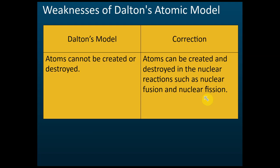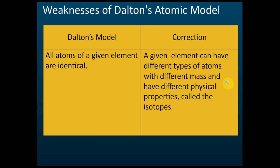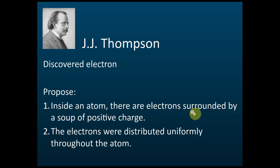So atoms can be created and destroyed. Also, Dalton said all atoms of a given element are identical, but not really — later scientists found that the same element can have different types of atoms. For example, carbon can be carbon-12, carbon-13, or carbon-14 — three different types of atoms from the same element, but with different mass and different physical properties. We call these isotopes, which we will discuss later.